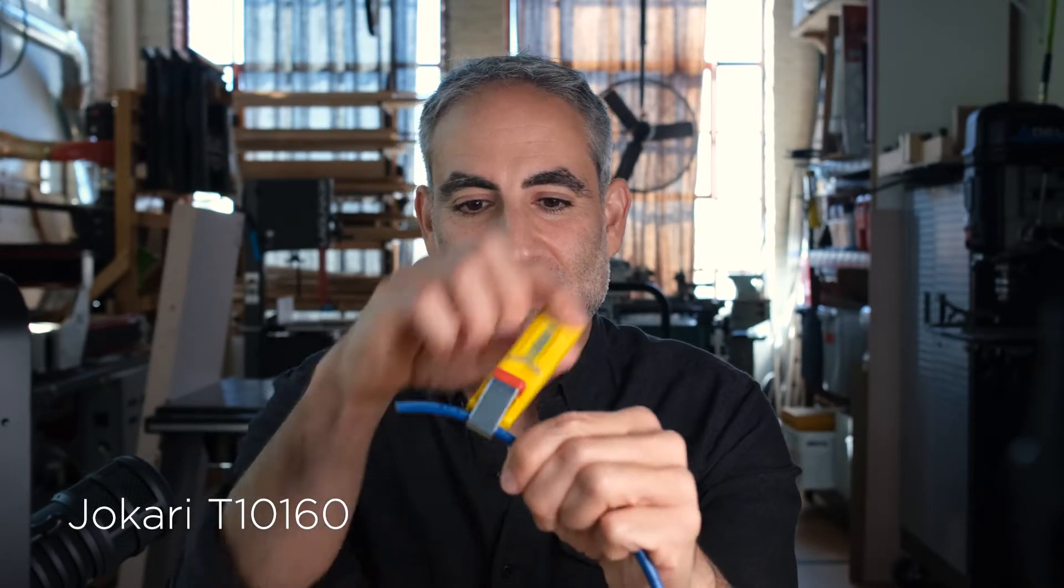This thing is amazing at doing exactly that. So take this cable and I want to take the jacket off of it. You just put it around there, give it a couple turns, pull it off the end there. And what it does is it slices a circle and the strip on the way out, so you can just take the jacket off.